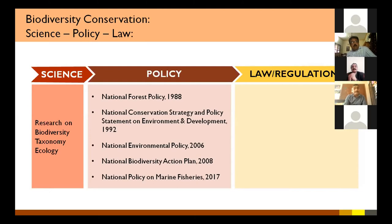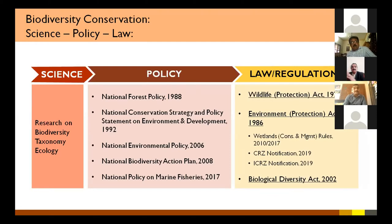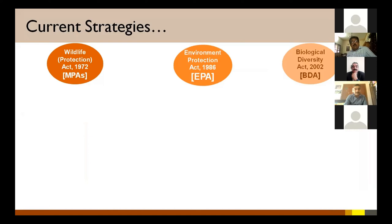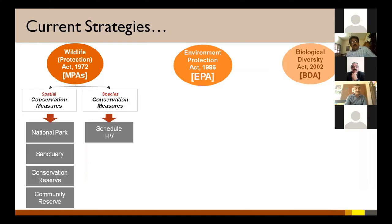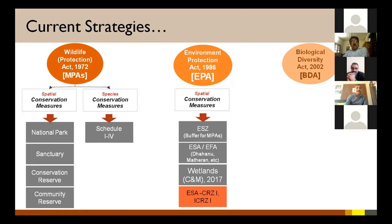We have many policies and laws — starting with the Wildlife Protection Act 1972, the Environment Protection Act, and the Biological Diversity Act. These are good laws and policies, but how effective they are in implementation is a big question mark — some places have been very effective, others require more intervention. Under the Wildlife Protection Act, conservation is divided into spatial conservation (national parks, sanctuaries, community reserves, marine national parks) and species conservation through four schedules, with Schedule 1 indicating the highest protection priority.